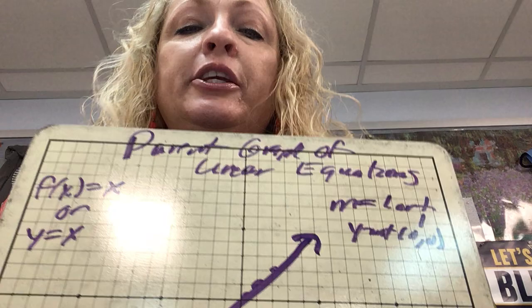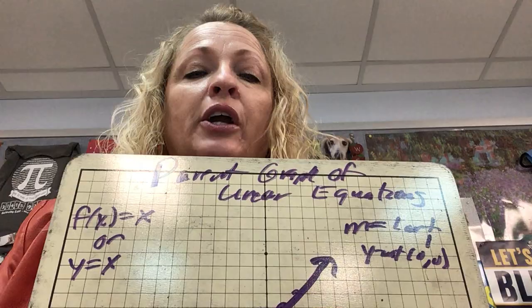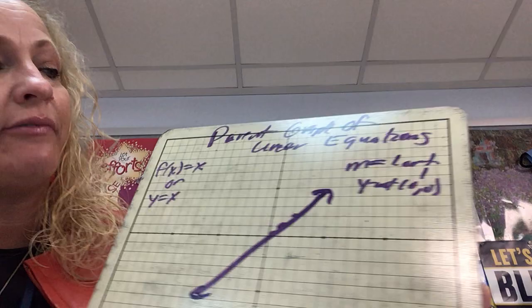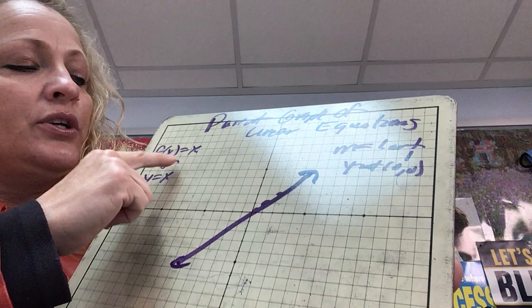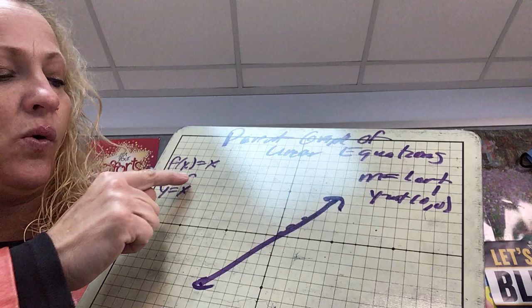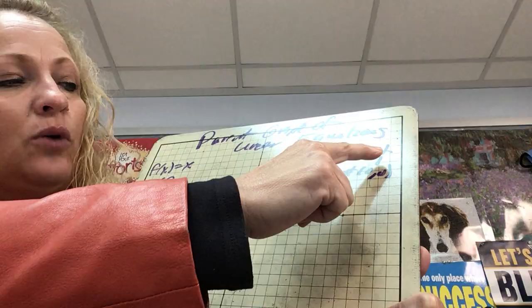Today we are going to start our mini-unit on transformations. Now that you are experts on graphing linear equations, I'm going to use some vocabulary called a parent graph. The parent graph of linear equations is this line. The parent graph equation is f(x) = x, or y = x. So if y = x, my slope is 1 and my y-intercept is 0.